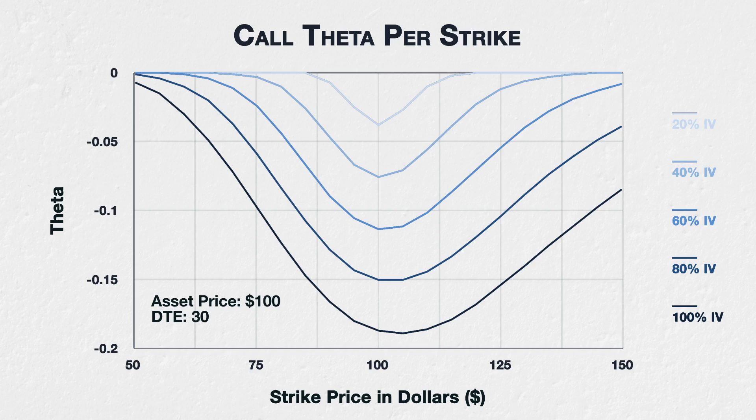The strikes range from $50 to $150. This is essentially the same chart we looked at in the previous lecture, except instead of only looking at the 40% implied volatility level, we've included a separate line for five different implied volatility levels, from 20% up to 100%. The 40% line is exactly the same as in the last lecture, and for each of the other four lines, the only parameter that has been changed is the value for implied volatility.